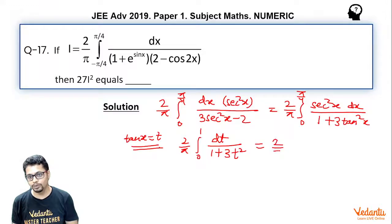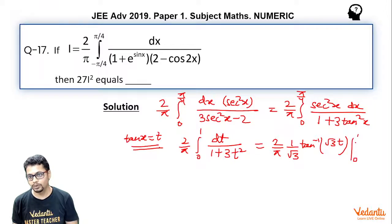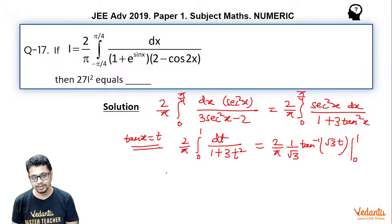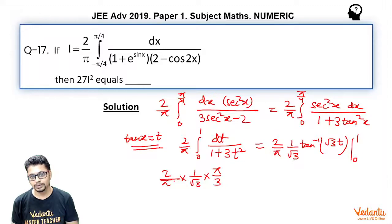Evaluating, I = 2/π · tan⁻¹(√3 · t) · (1/√3) evaluated from 0 to 1. tan⁻¹(0) = 0 and tan⁻¹(√3) = π/3. So I = 2/π × (1/√3) × (π/3). The π terms cancel, giving I = 2/(3√3).